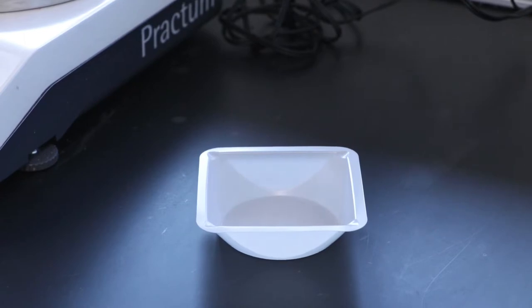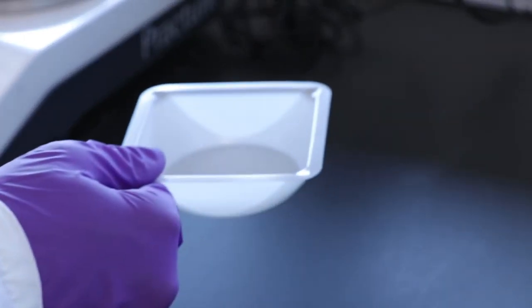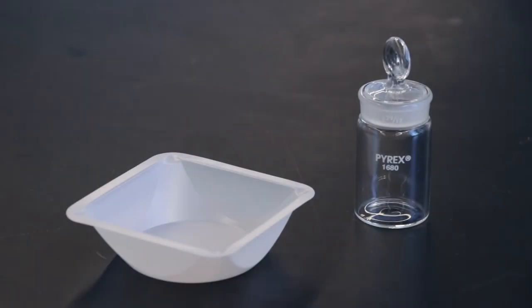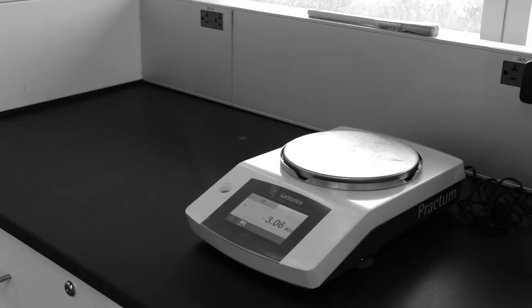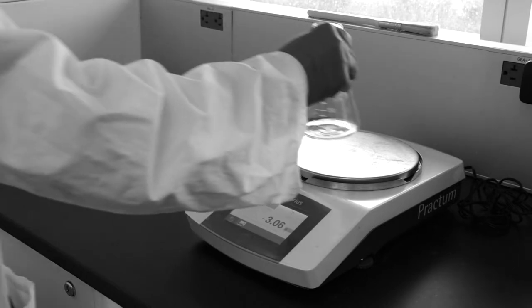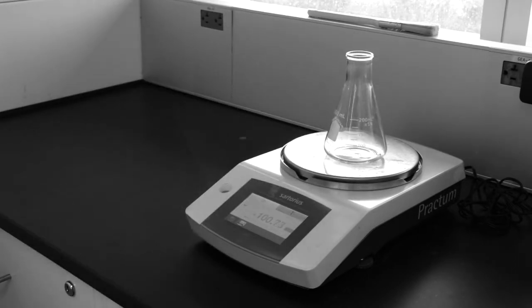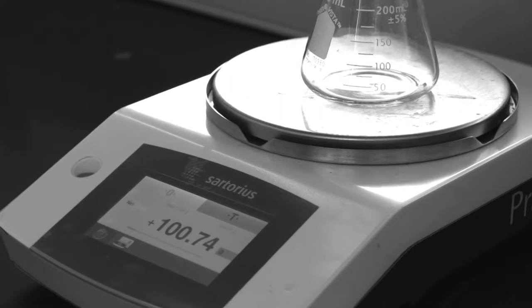First place a plastic weighing boat on a teared top loading balance. A weighing boat or bottle should always be used to weigh out solids. Never use heavy glassware such as Erlenmeyer flasks or beakers on both top loading or analytical balances as these are too heavy to be weighed.